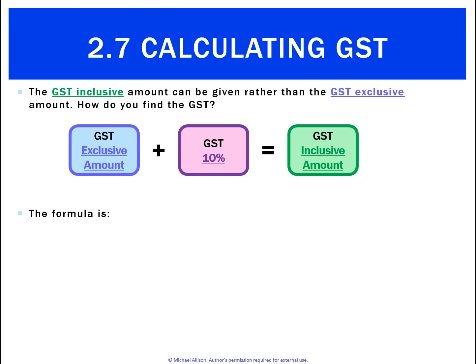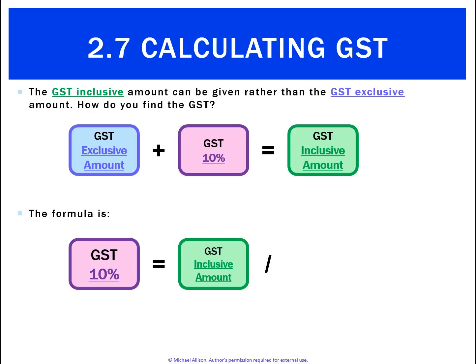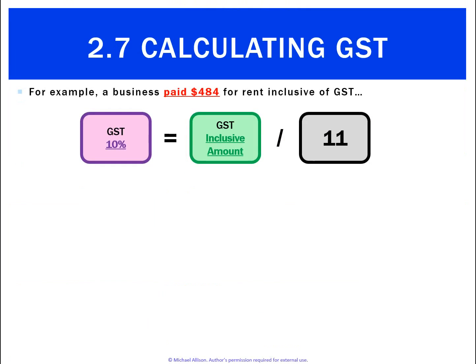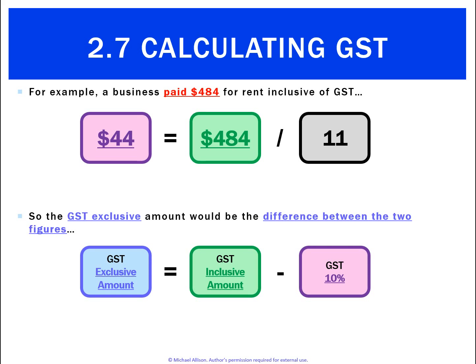What we want to do is handle questions where we're just given the GST inclusive amount. To find the GST, we take the inclusive amount and divide it by 11. For example, a business paid $484 for rent inclusive of GST. Dividing $484 by 11 gives us $44 GST. From there, we can work backwards: the GST exclusive amount is $484 less the $44 GST, which is $440.